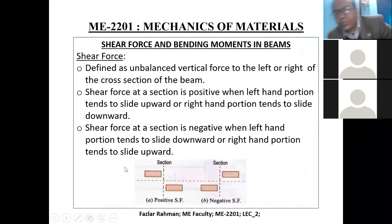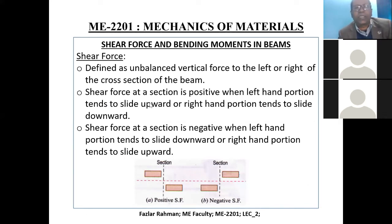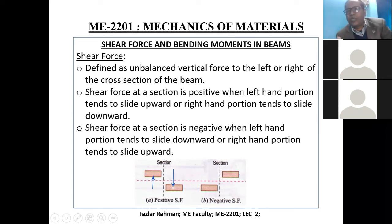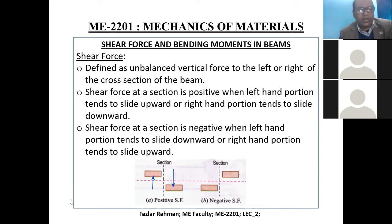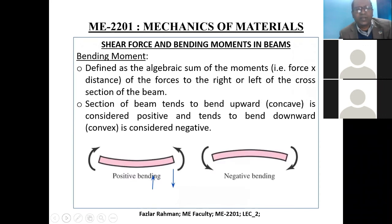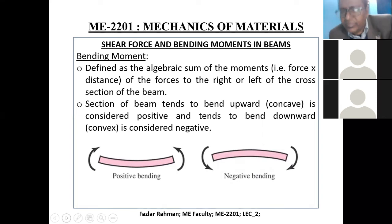Shear force — I already explained it. If the shear force is working upward with respect to the right side, it is called positive shear. If a beam section moves upward, it is positive shear; moving downward is negative shear. Bending moment is defined as the algebraic summation of all the moments of the forces to the right or left side of the cross section.